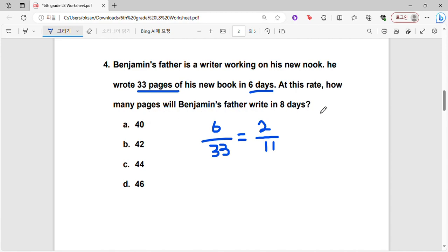So now let's use this simplified rate in order to find the pages he wrote in 8 days. That means for every 2 days he writes 11 pages, right? So then we can multiply by 4.